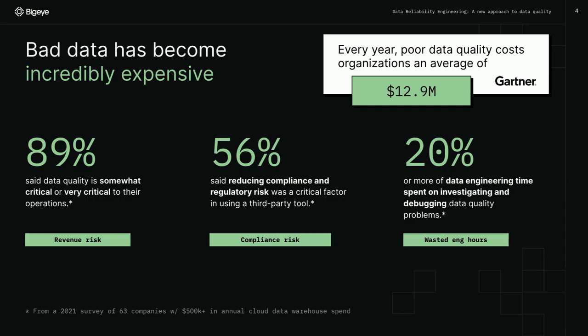Bad data is really expensive. Everyone loves this Gartner number — $13 million a year is wasted on data quality problems. Data quality is a problem not just from a revenue perspective, but for compliance reasons. And really, as a data engineer, what mattered to me most is wasting my time having to go through all my pipelines, debug them, understand where things are coming from. We at BigEye want to build tools so that data engineers don't have to waste their time on data quality problems.